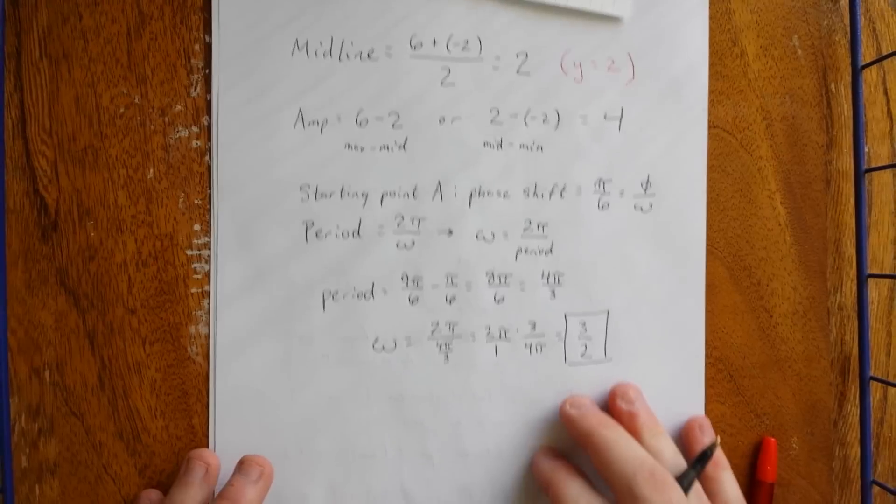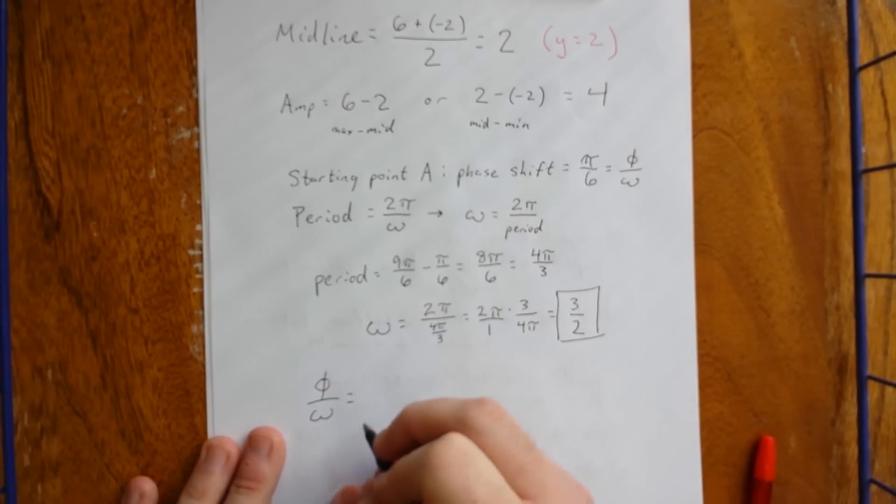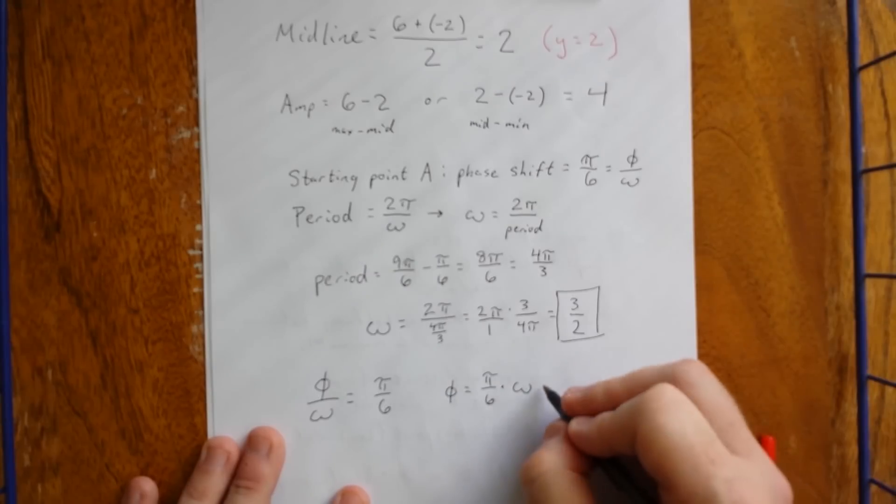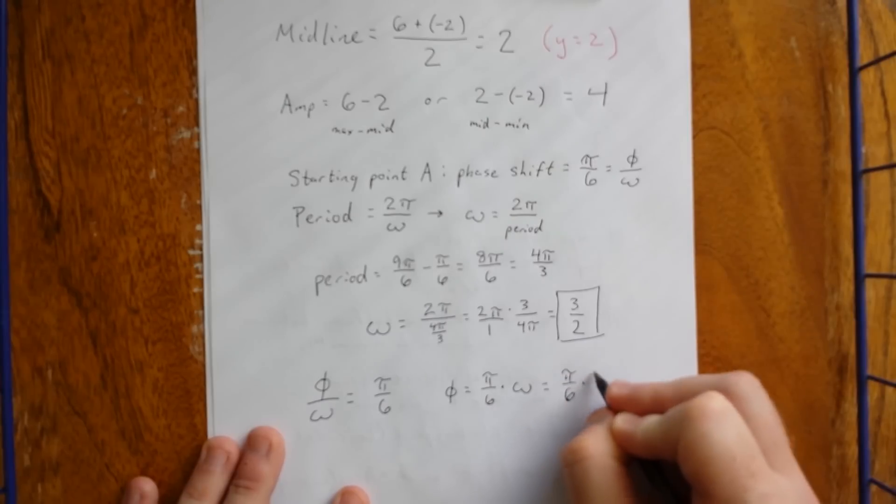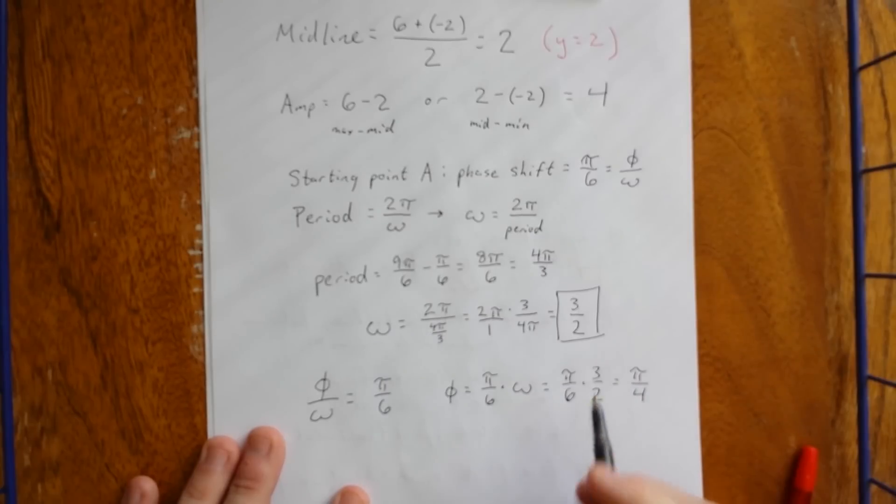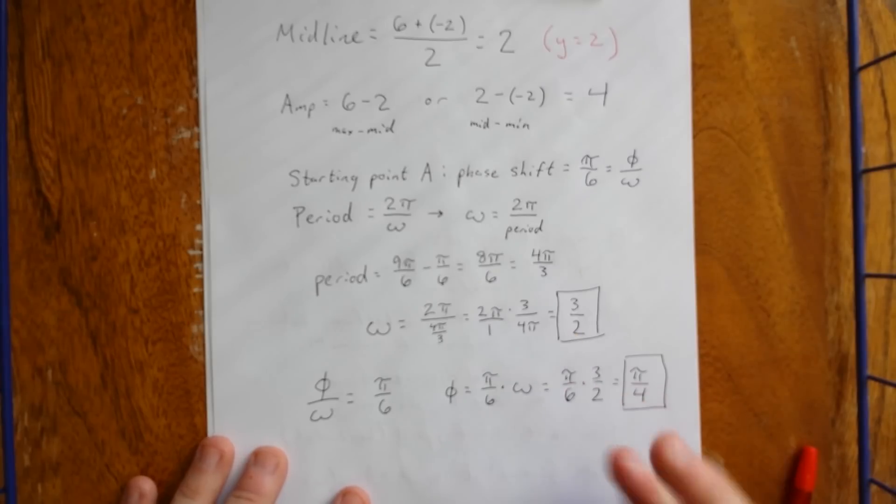Now let's head back to the phase shift and see if we can calculate the value of phi. Now we just said a second ago that phi over omega is equal to pi over 6. That also tells me that phi is equal to pi over 6 times omega. But we just calculated that omega is 3 halves. So this will be pi over 6 times 3 halves. Just simplifying that, we get pi over 4. 3 over 6 reduces down to 1 over 2. 2 times 2 in the denominator gives us that 4. So, we have phi is pi over 4. Omega is 3 halves.